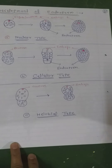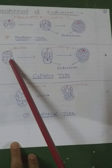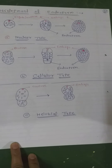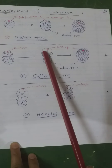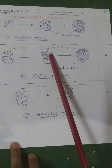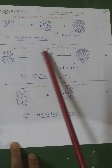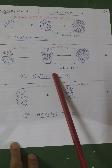The second type is cellular type, found in 72 families of dicotyledons. In this type, division of the triploid endospermic nucleus is immediately followed by wall formation, so the endosperm is cellular right from the beginning. That is, nuclear division is immediately followed by wall formation.